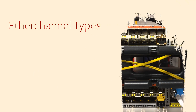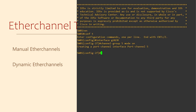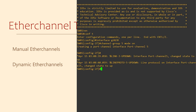EtherChannels can be configured either manually or dynamically. We'll start by looking at manually for now. We first need to add a physical interface into the EtherChannel — we're going to start with gig 0/1. Under the interface, we're going to enter the command 'channel-group 5 mode on'. Notice number 5? This represents the logical interface that we're creating. It can be any reasonable number.